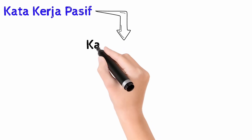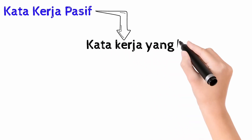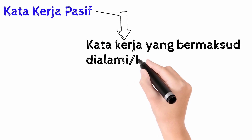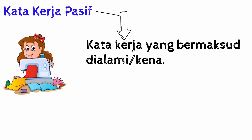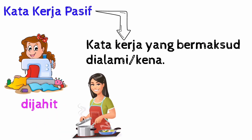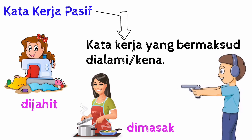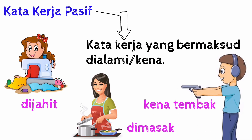Sekarang mari kita lihat definisi bagi kata kerja pasif. Kata kerja pasif adalah kata kerja atau perbuatan serta perlakuan yang membawa maksud dialami atau kena. Contohnya adalah dijahit, dimasak, kena tembak dan lain-lain lagi.